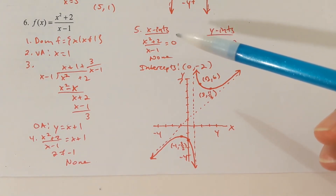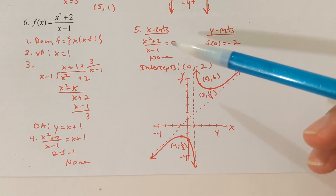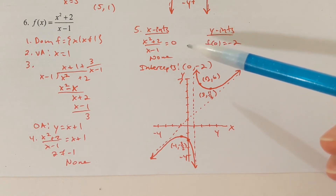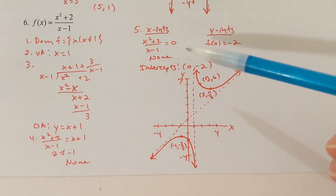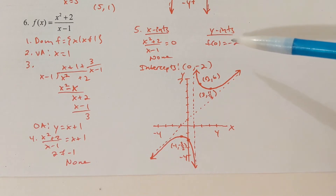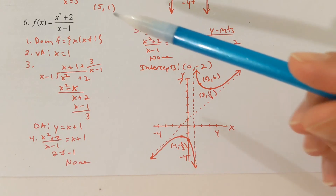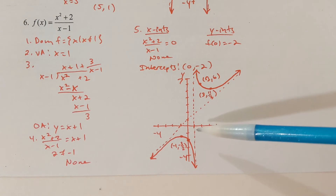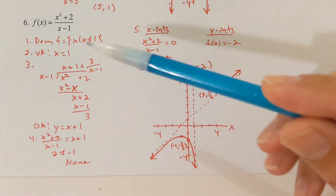Step 5: x-intercepts — set x squared plus 2 divided by x minus 1 equal to 0, which gives x squared equals negative 2. Since squaring any number gives a non-negative result, there's no x-intercept. For the y-intercept, f of 0 equals negative 2, so the only intercept is at (0, negative 2).